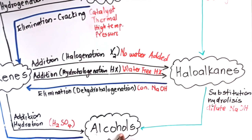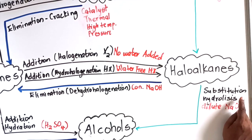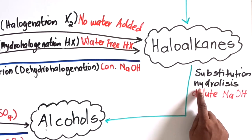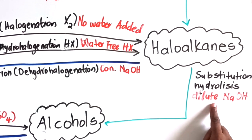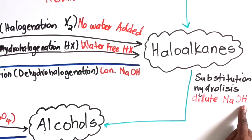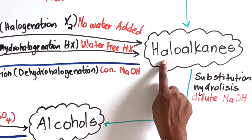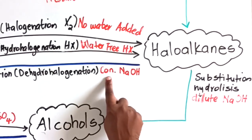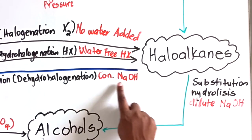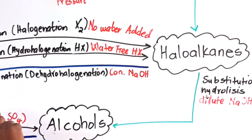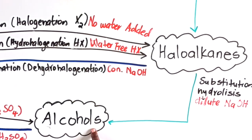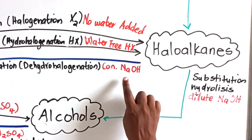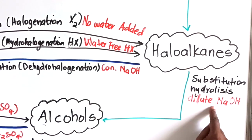When a haloalkane forms an alcohol through substitution, the process is called hydrolysis. The reaction condition is a dilute strong base, for example dilute sodium hydroxide. Notice: when working with haloalkanes, you must look at whether the base is concentrated or dilute. Concentrated strong base → elimination (forms alkene). Dilute strong base → substitution/hydrolysis (forms alcohol).